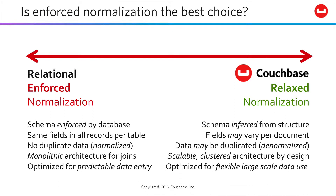Relational databases are optimized for predictable data entry, where you know the shape of your data far in advance and you don't expect it to change very often. By contrast, Couchbase is optimized for flexible, large-scale data use that matches the development patterns we actually see in current software development.